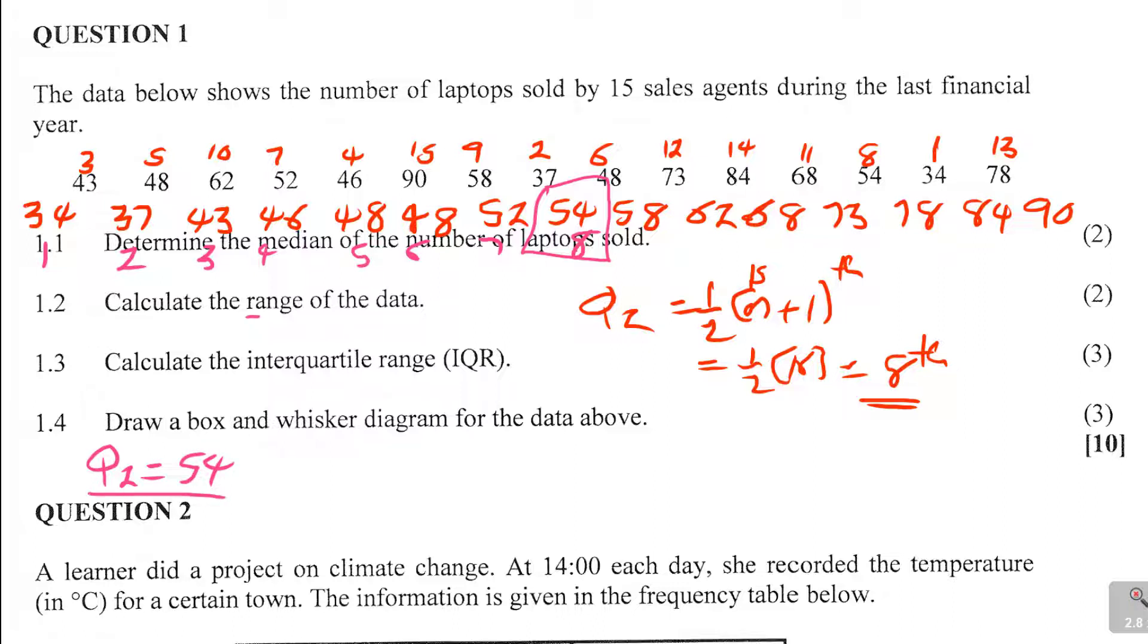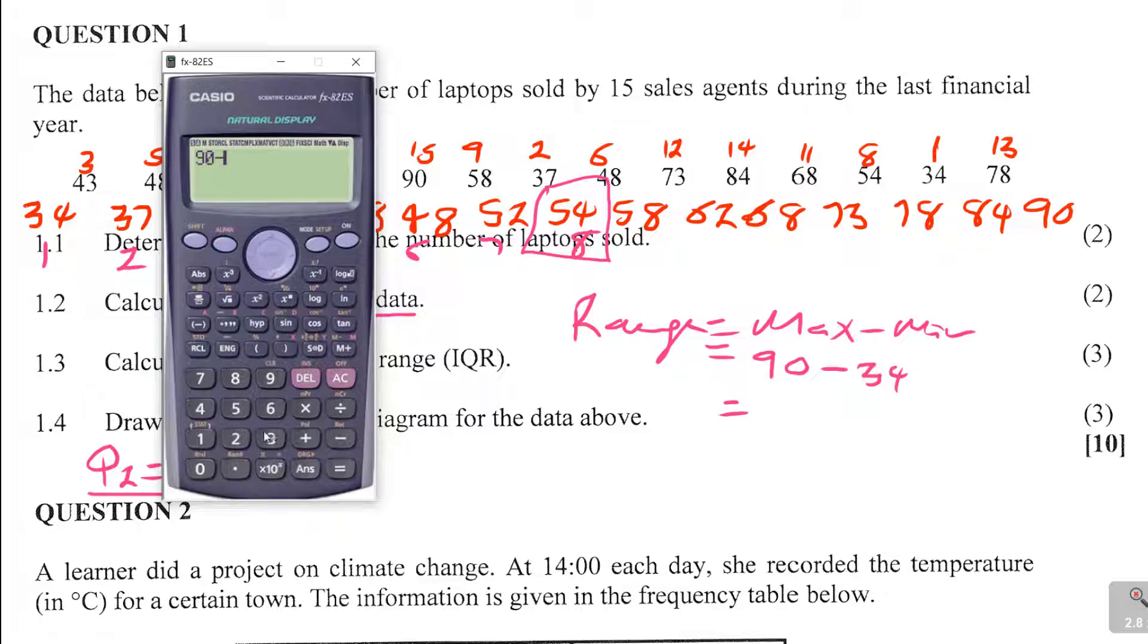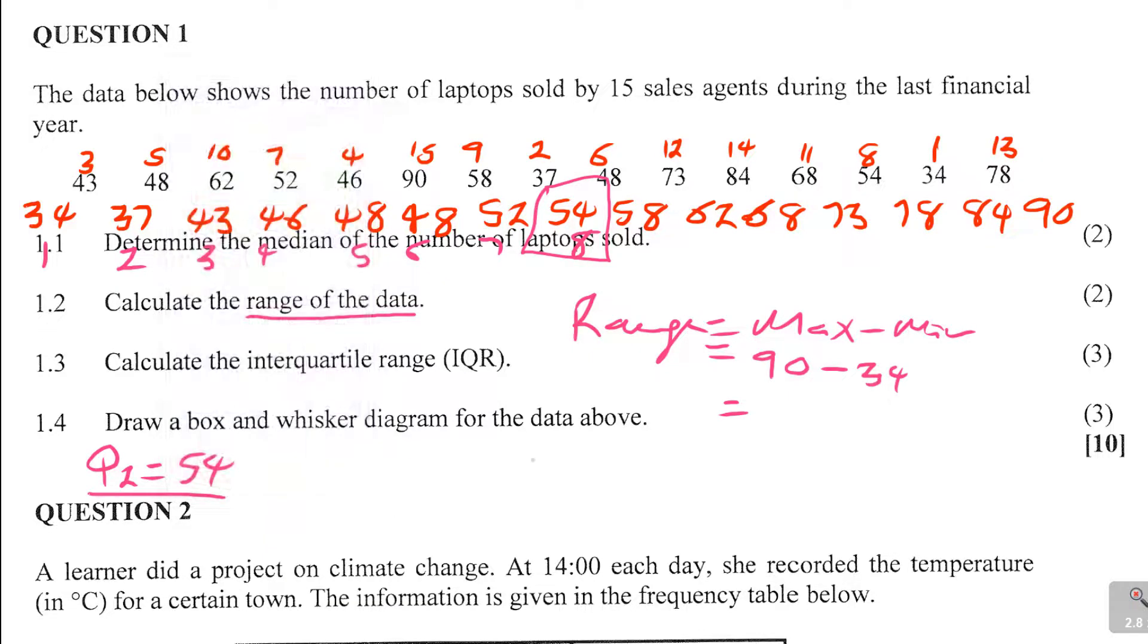See that. And then calculate the range. What does the word range mean? Range means take the maximum and take the minimum and separate them. So range here is equal to max minus the minimum, just that. Which is what? The maximum is 90 and the minimum is 34. That's it. And then you get your answer just like that. You don't have to stress and do whatever thing. It's 90 minus 34, and you get 56. So 1.2 is 56. The maximum and the minimum.